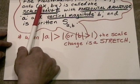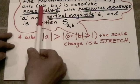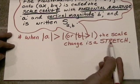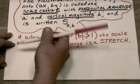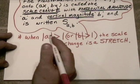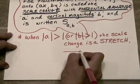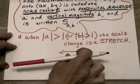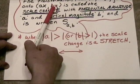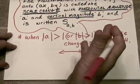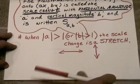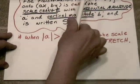If the absolute value of A or B is greater than 1, the scale change is called a stretch. If you multiply by 2 or by 3 or whatever, that means the horizontal dimension is going to stretch. The figure is going to get wider. If the B is greater than 1, the vertical dimensions on the figure will stretch. The A and the B don't have to be the same on a scale change.